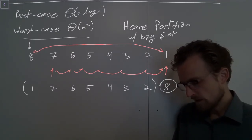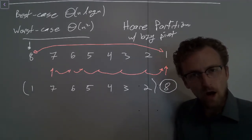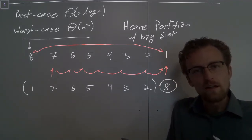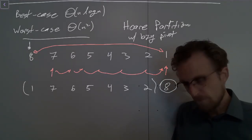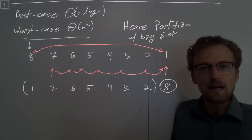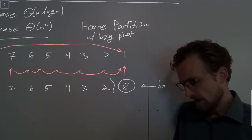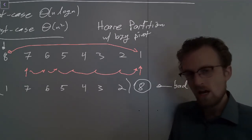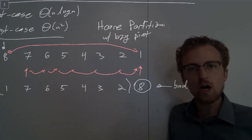Quicksort now knows that 8 belongs at the end, so it won't deal with 8 anymore — it's going to sort the rest. Let's pause and think about whether this is good or bad. What we see is that if the array is sorted in reverse order and we're using this particular partitioning rule, the first split is a bad split — a maximally imbalanced split. The first split saves a huge amount of work for the next call. It saved the seven-element array for next time, and the only progress we made was determining the location of one element.